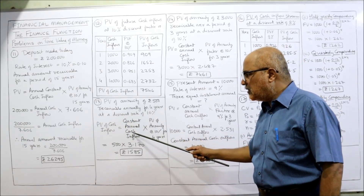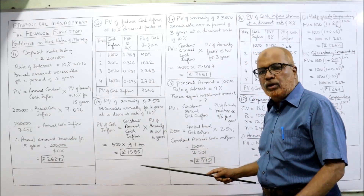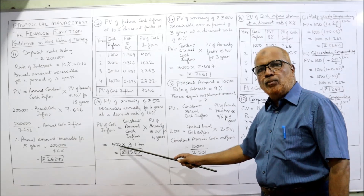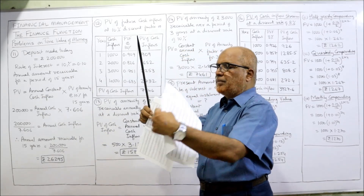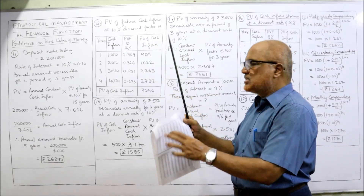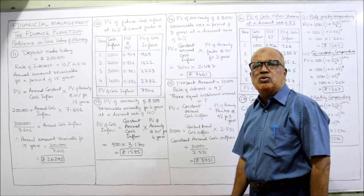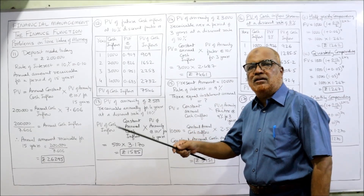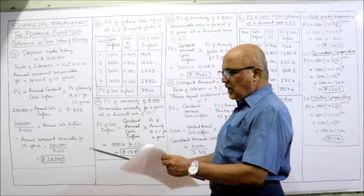Using the PV of annuity formula: PV = Constant Annual Cash Inflow × PV of Annuity Factor at 10% for 4 years. The constant annual cash inflow is 500 rupees. From the PV of annuity table at 10% for 4 years, the factor is 3.170. So 500 × 3.170 = 1,585. That is the present value of 500 rupees receivable at the end of year 1, 2, 3, and 4 at a 10% discount rate.